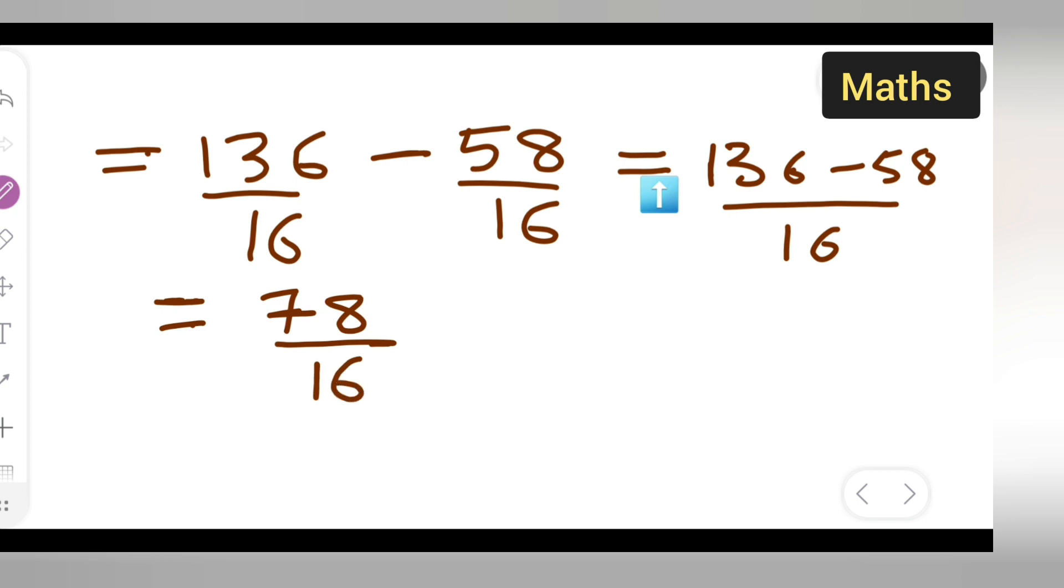You can cancel this in the table of 2 itself. 2 times 8 is 16, 2 times 3 is 6, 2 times 9 is 18. So your answer is 39 upon 8.